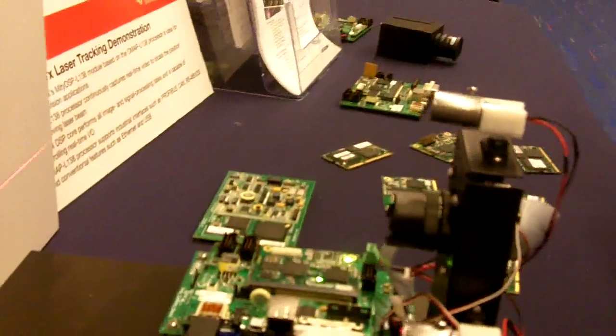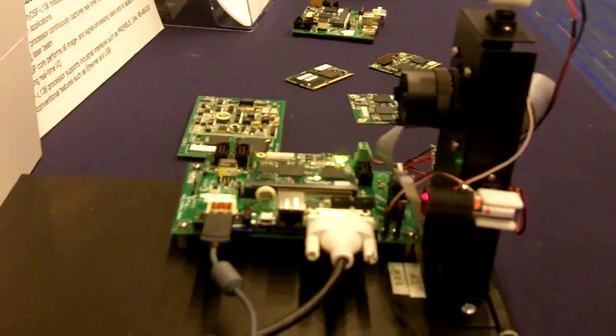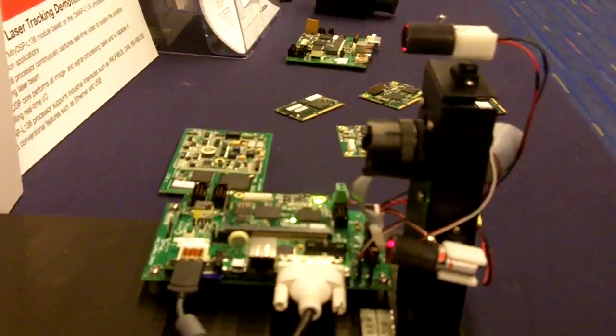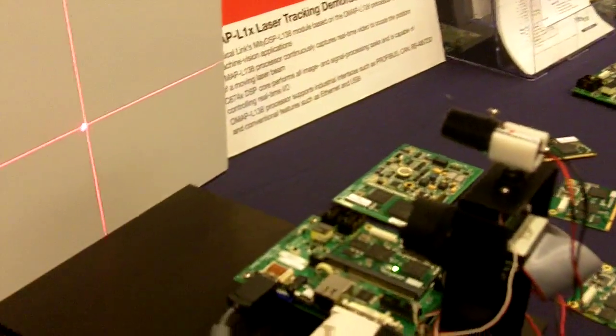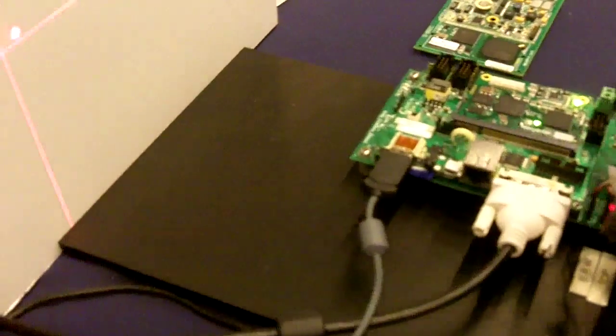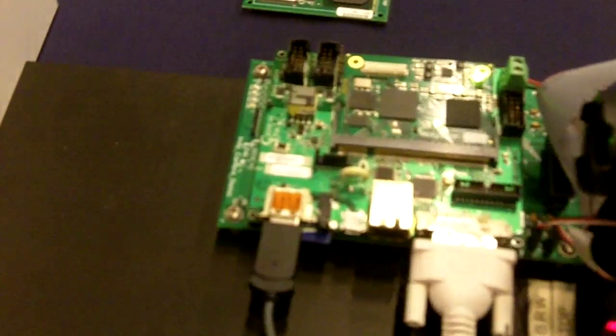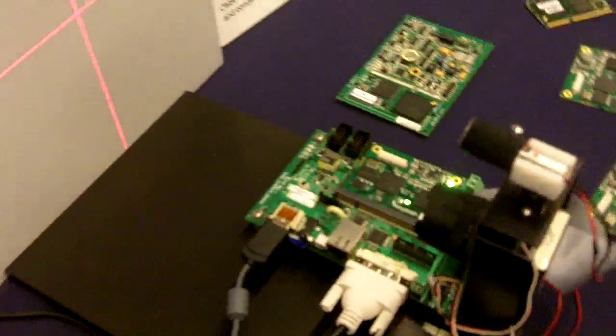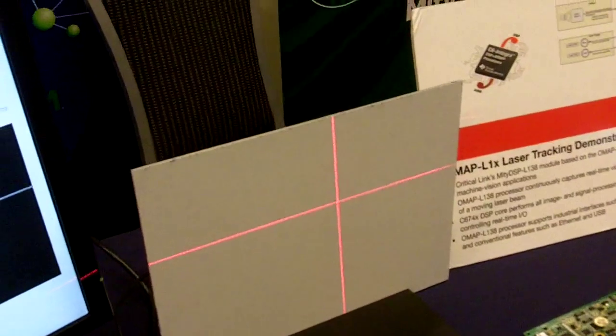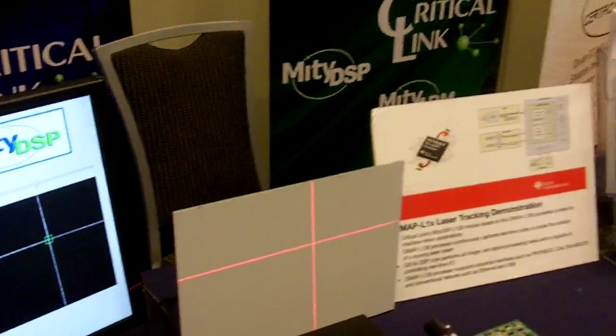How this is working is we have a camera head and a parallel camera interface. The parallel interface runs through the video port interface into the DSP in the OMAP L138. The OMAP L138 features both a 674X DSP married to an ARM 9 running at 456 MHz.